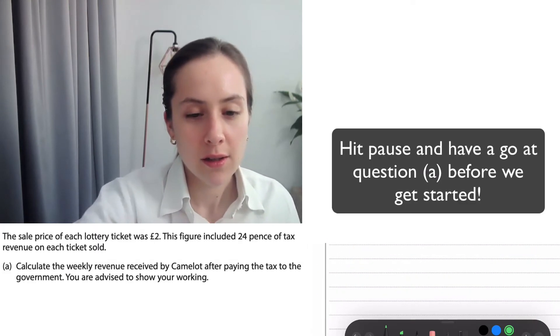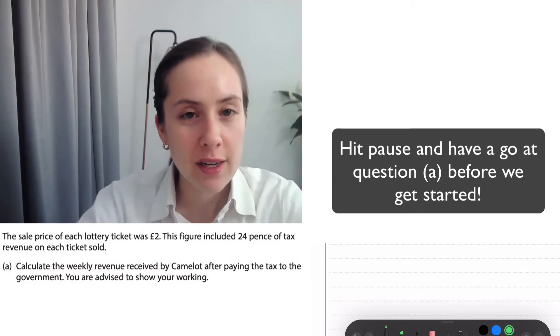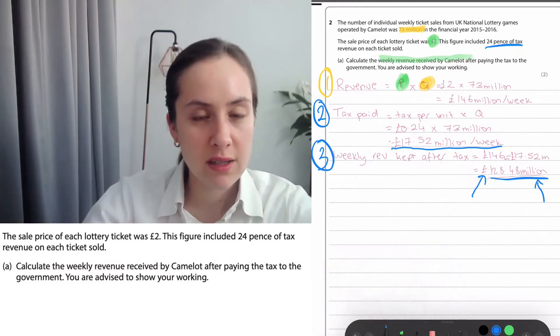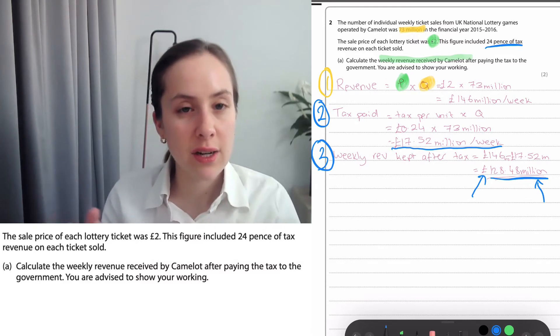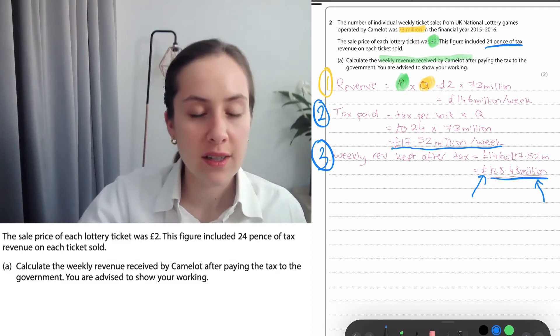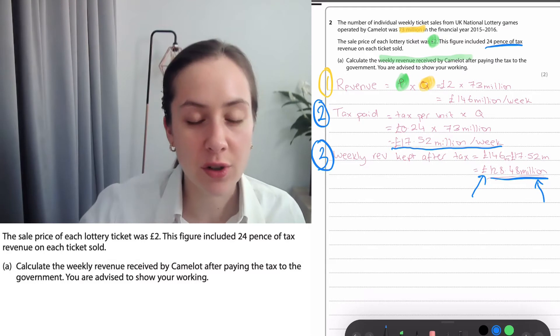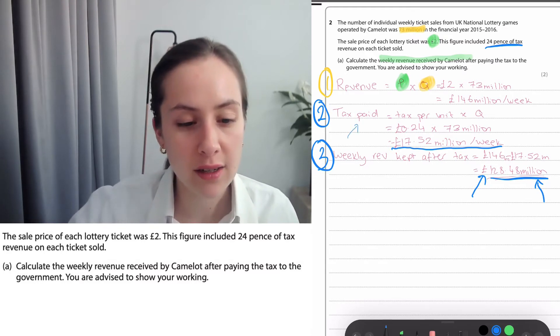To work out the weekly revenue after the tax, I split it in stages. First of all, I worked out the revenue, which is price times quantity. The price has been highlighted in green as two, and the quantity is 73 million. If you multiply these together, you get that the revenue is 146 million per week.